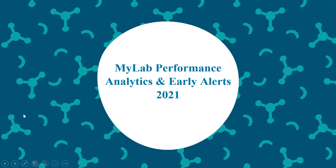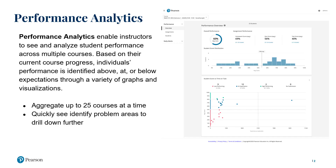MyLab performance analytics and early alerts updates 2021. Performance analytics enable you as instructors to see and analyze student performance across multiple courses. Based on course progress, students' performance is identified as above, at, or below expectation through a variety of graphs and visualizations. You can aggregate up to 25 course sections at a time.